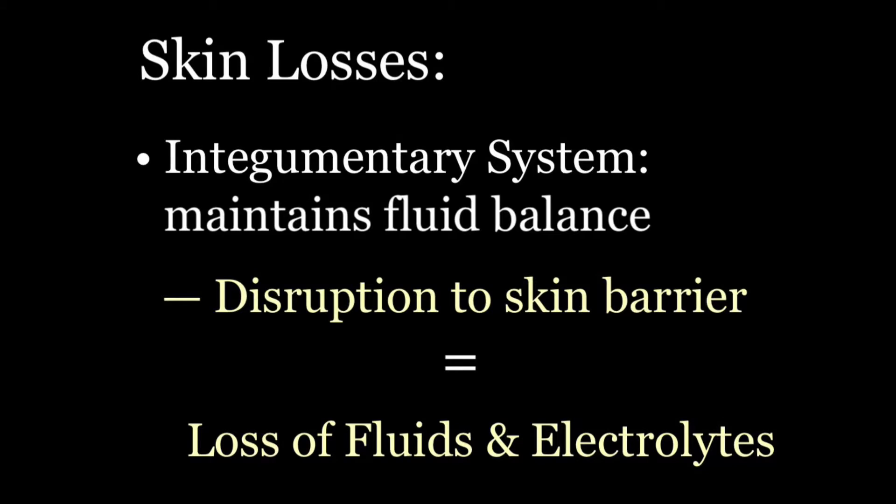Moving on to skin losses: part of the role of the integumentary system is to maintain fluid balance. Anytime the skin barrier is disrupted, we lose fluids and electrolytes. So if we have severe burns, we lose potassium and become hypokalemic.